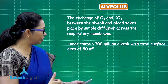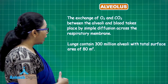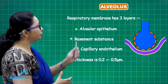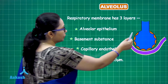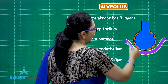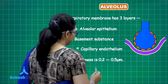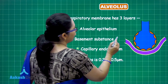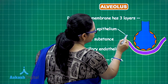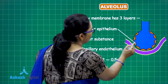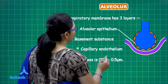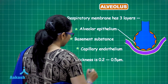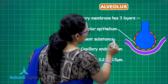The respiratory membrane consists of the alveolus surrounded by blood capillaries. The alveolar epithelium is simple squamous epithelium, and below it there is a basement substance, just as there is a basement substance in the capillary endothelium as well.